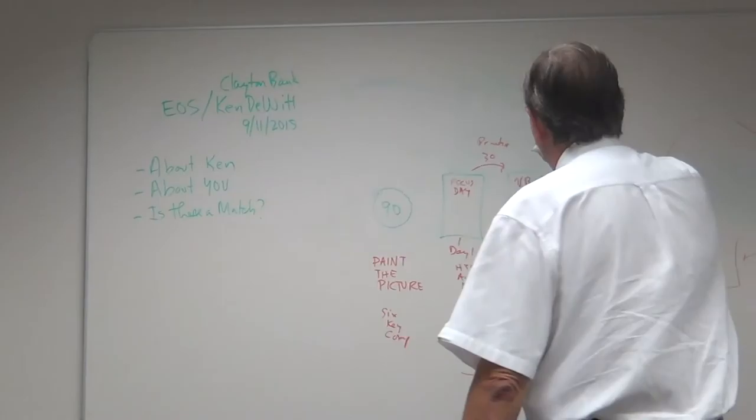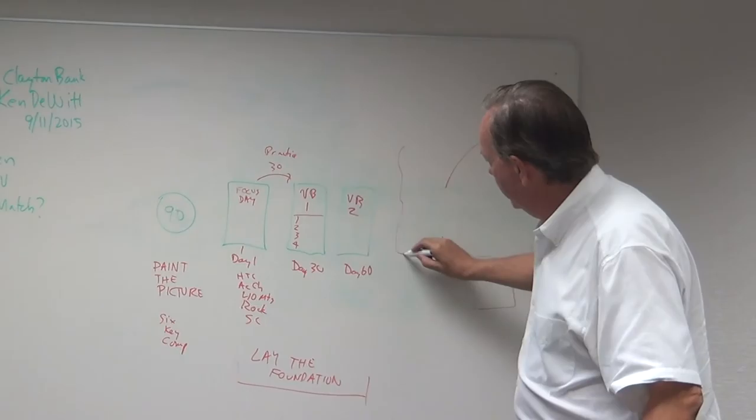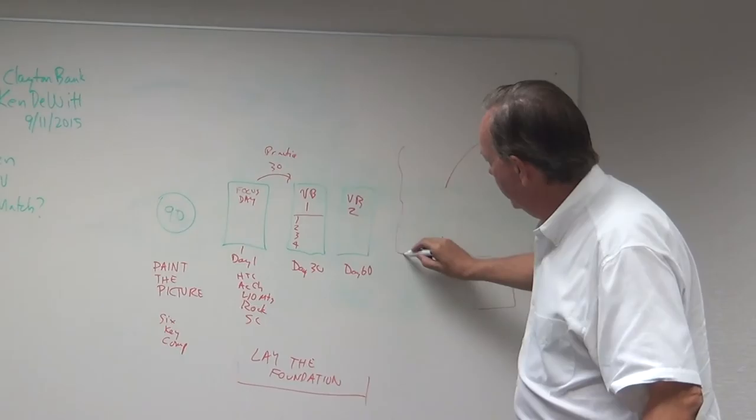Somewhere right in here we start talking about how are we going to roll it out to the rest of the organization. Because right in here somewhere, and this is not on Gino's chart, is rollout. Rollout is how you start training others beyond the leadership team.